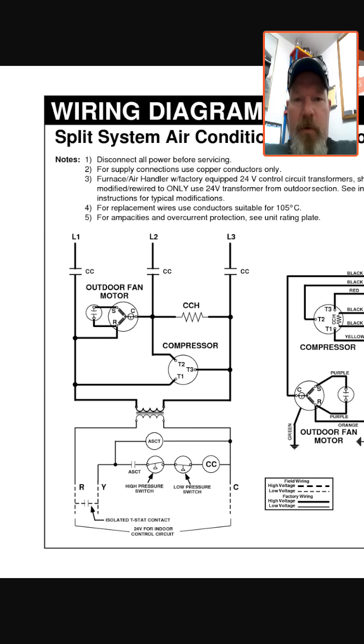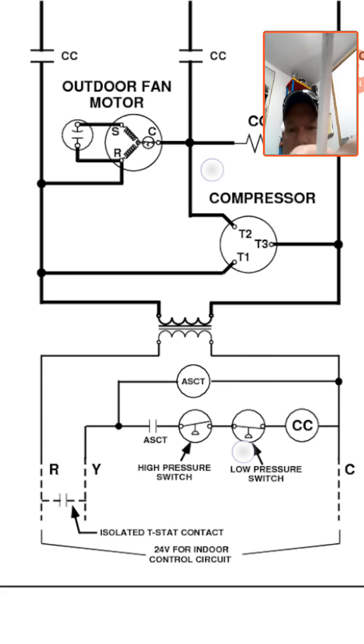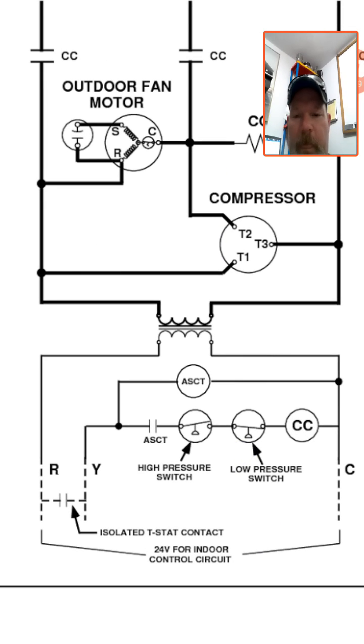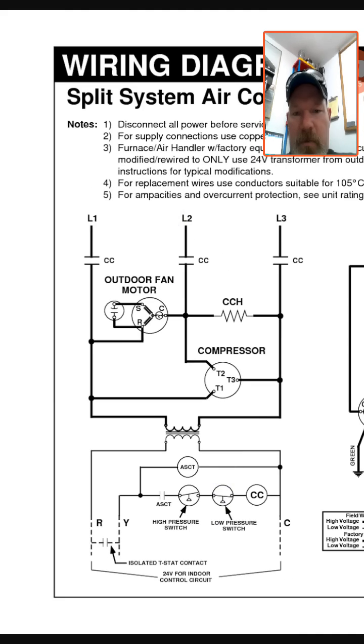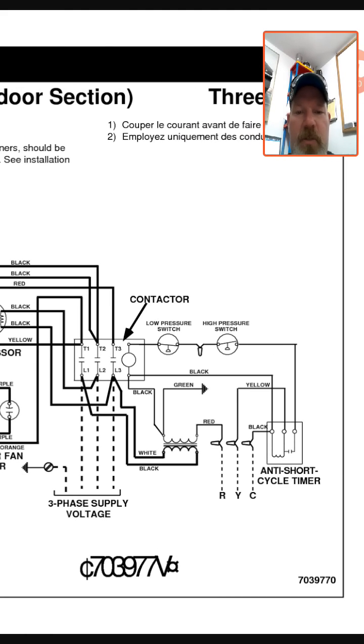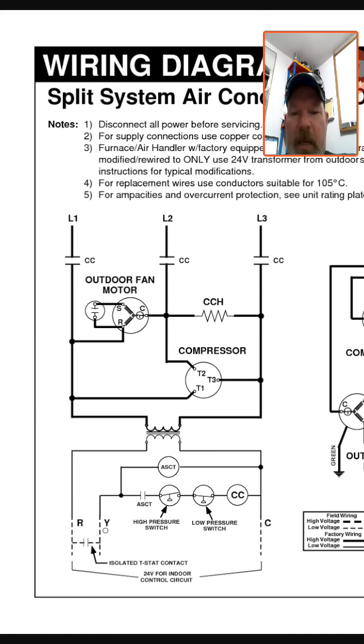You see here it comes off this side, and we have R. Let's read here and see what it says: isolated t-stat contact. So this would be your call for cooling. It may be connected to some other controller or an energy management system, or in the simplest case, a thermostat. As it sends a signal down the Y terminal, it comes into ASCT. Let's see, not real sure what ASCT is. Let's come over here and see. Oh, anti-short cycling timer.